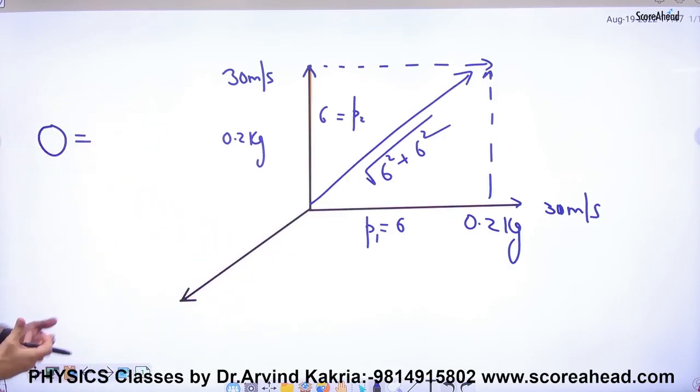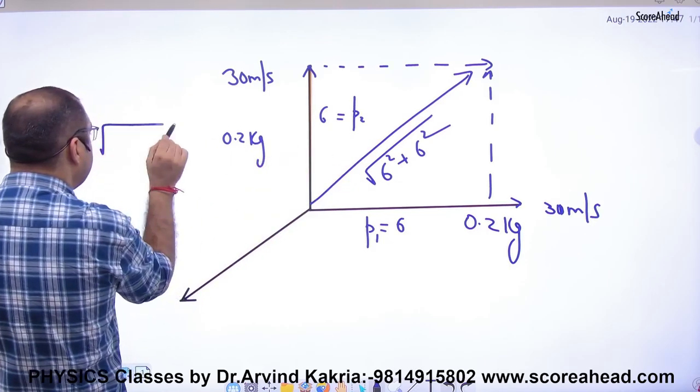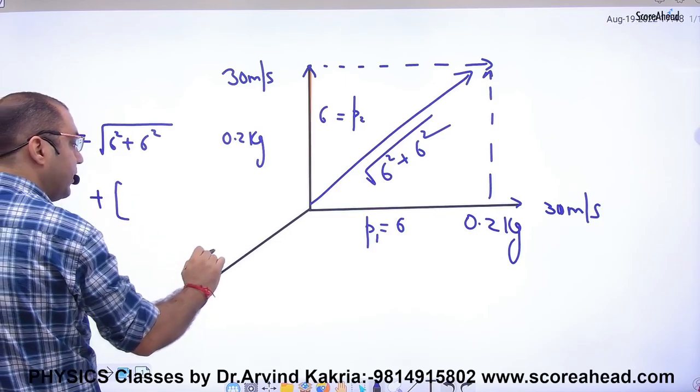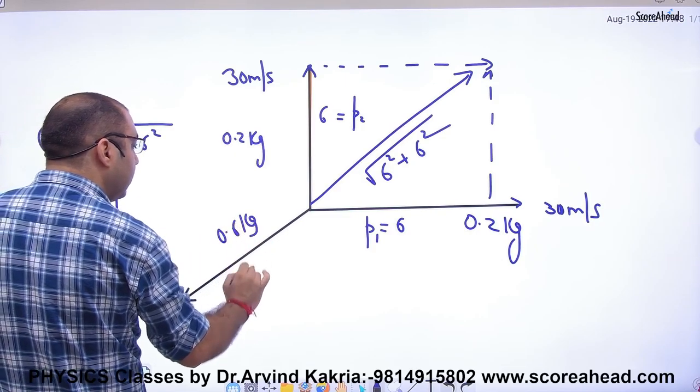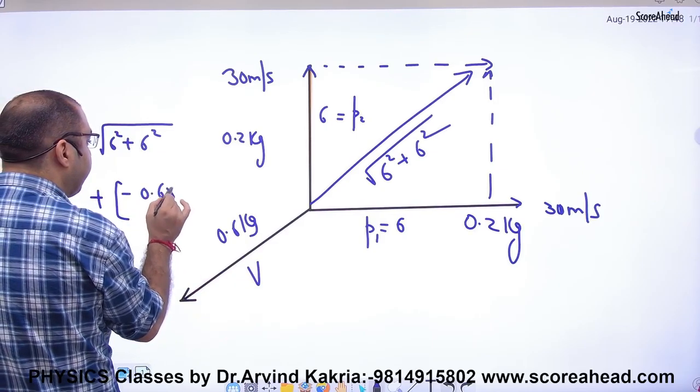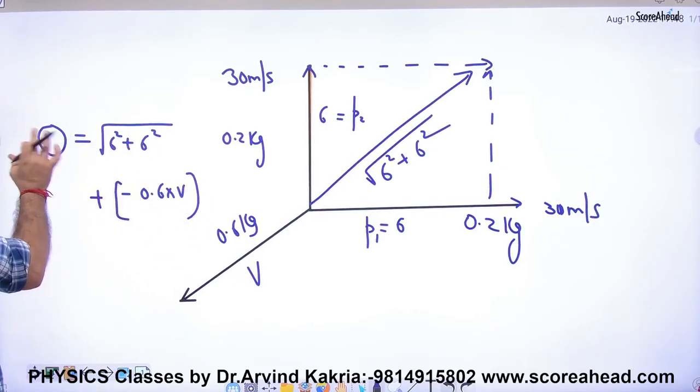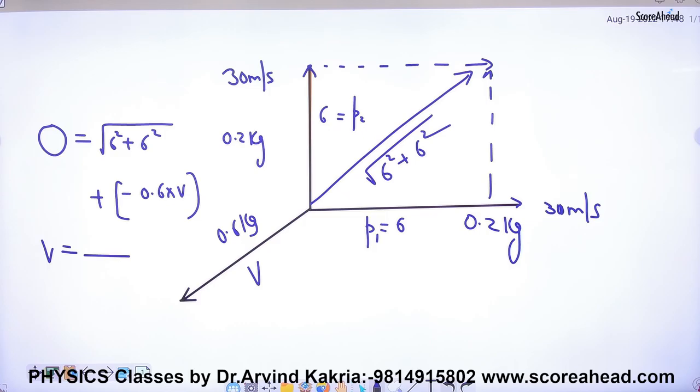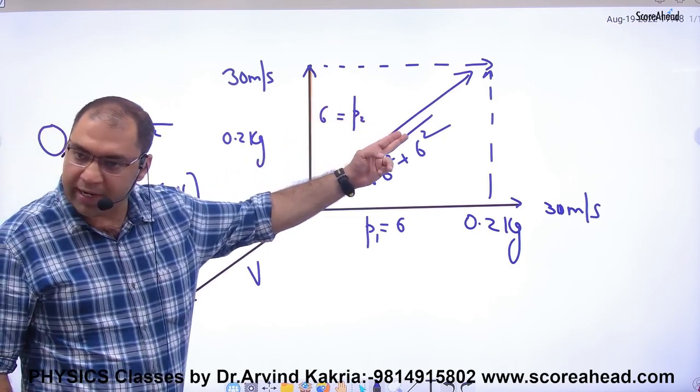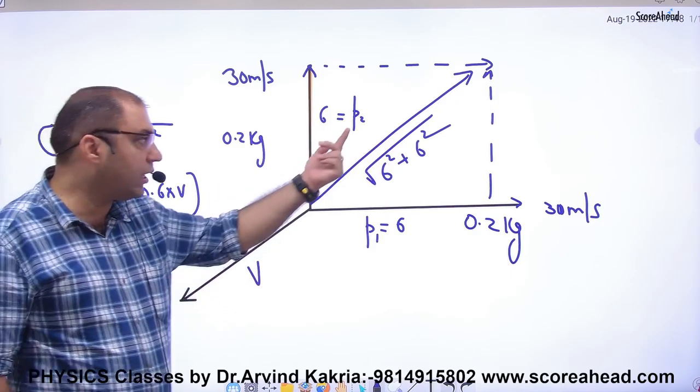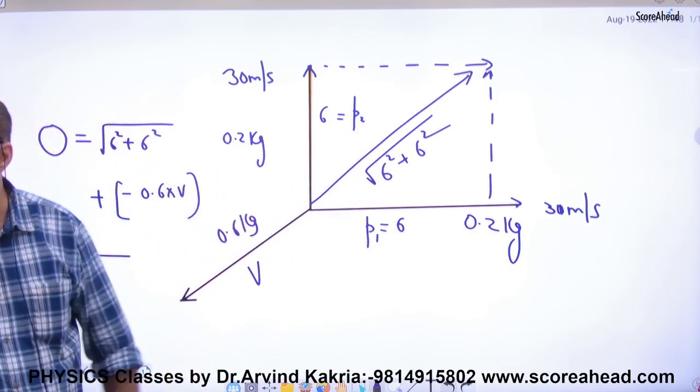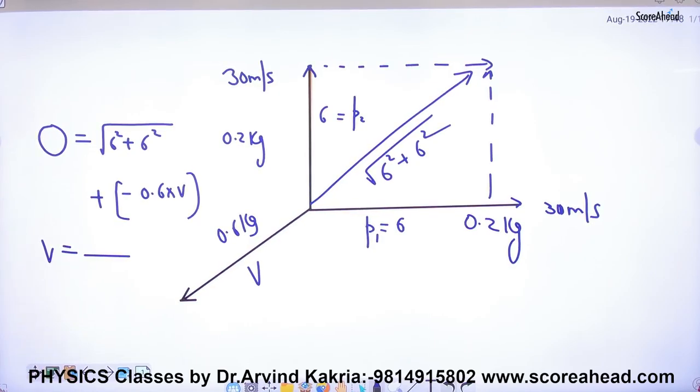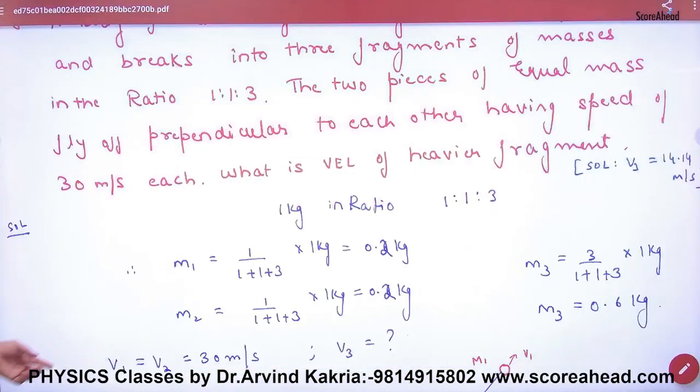In this case, net momentum of both is square root of (6² + 6²), because momentum is a vector quantity. When the bomb didn't explode, total momentum was zero. After explosion, one particle has momentum √(6² + 6²), and the other particle with mass 0.6 kg and velocity v must have momentum in the negative direction so their addition equals zero. From here v can be calculated. Point clear so far?